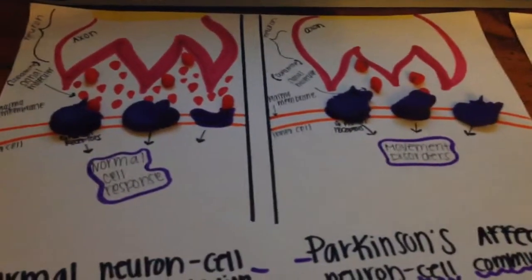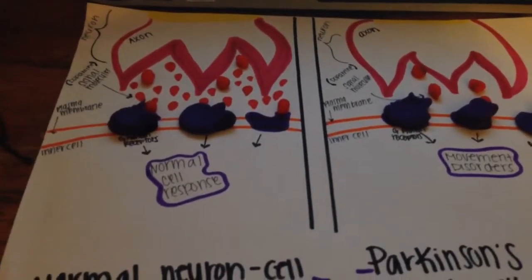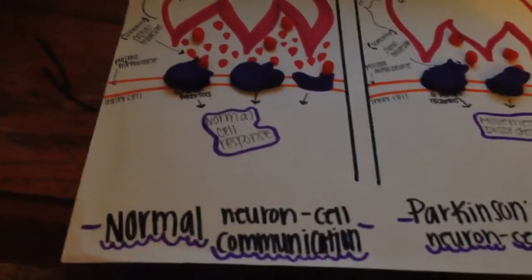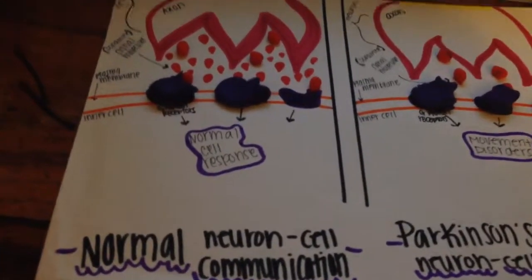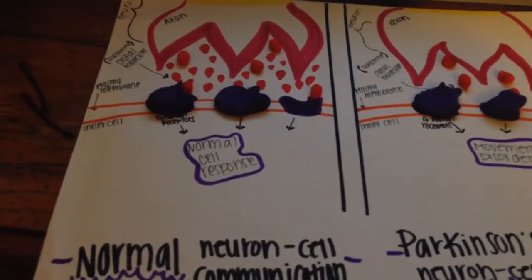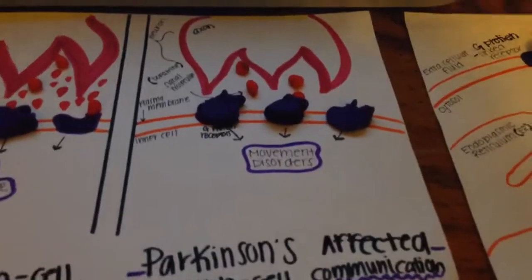In this case, there's tons of dopamine coming out of that one axon and being accepted by several different G-protein receptors. So this is what a normal neuron cell looks like in communication.